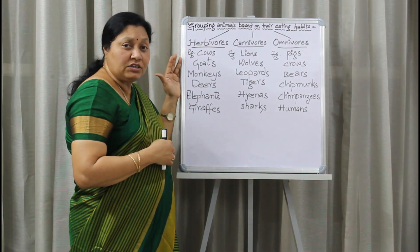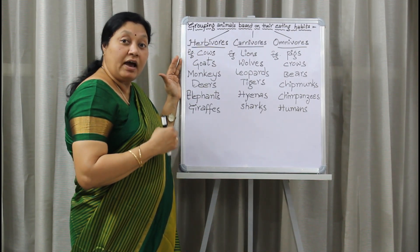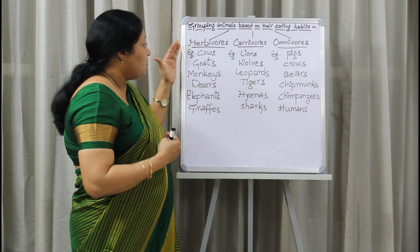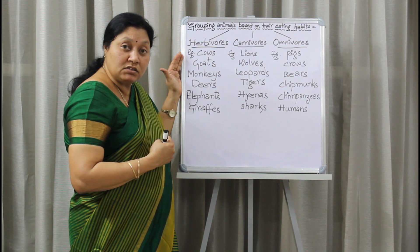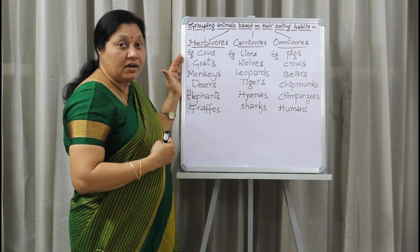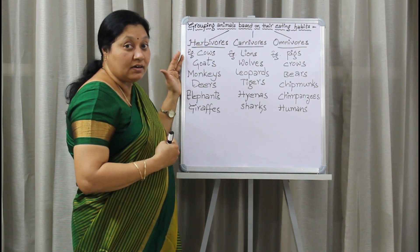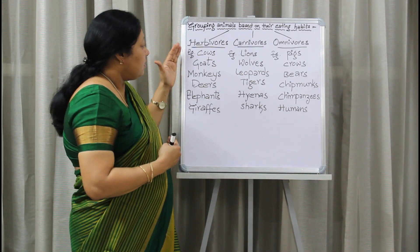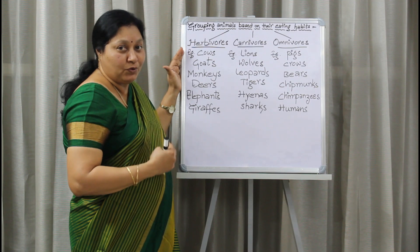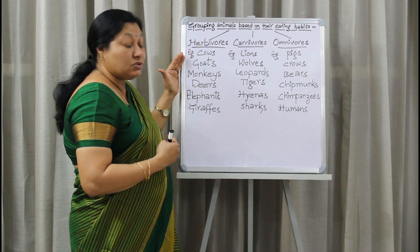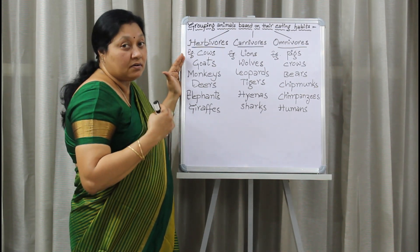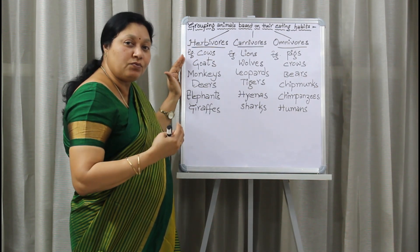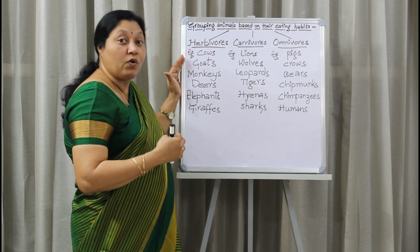Herbivores are plant eaters, so they have flat front teeth and wide back teeth. Most herbivores are large in size, and to satisfy their hunger they keep eating for most of the day. They eat large amounts of food.